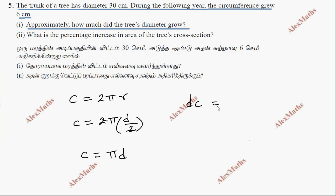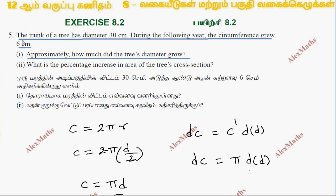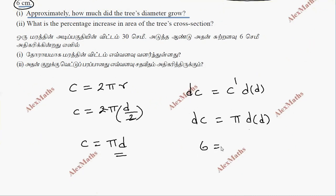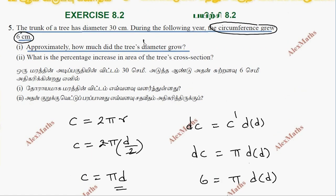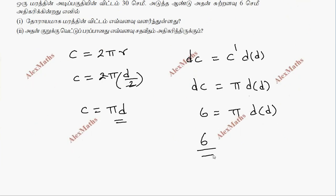The differential of the circumference, dc, equals π times the differential of the diameter, dd. This gives us the change in the diameter. So the first subdivision is complete — we can find how much the diameter grew.